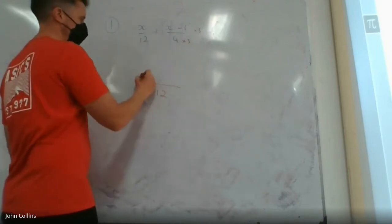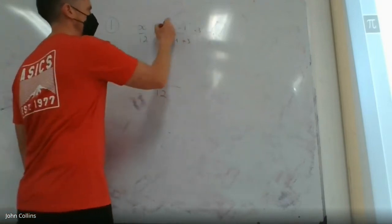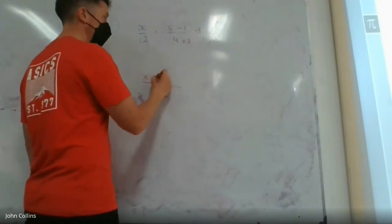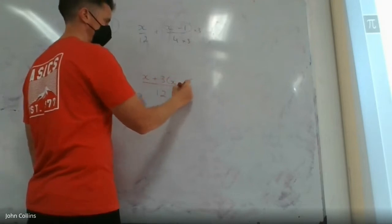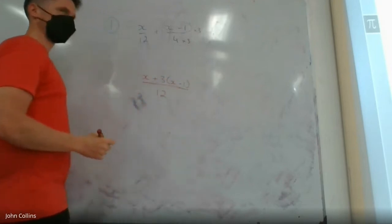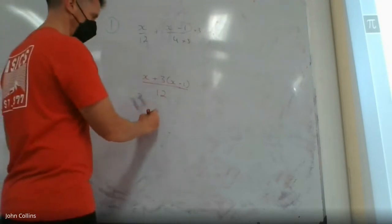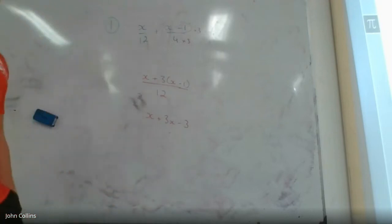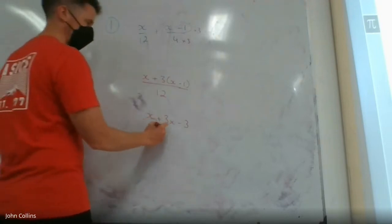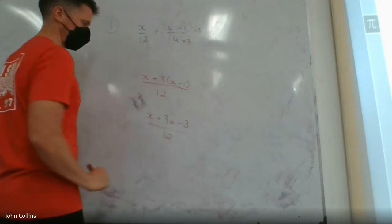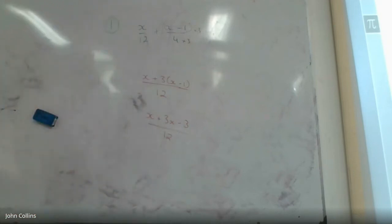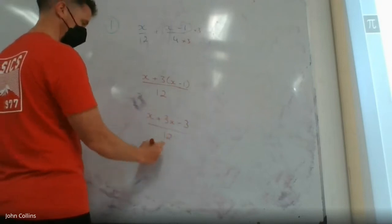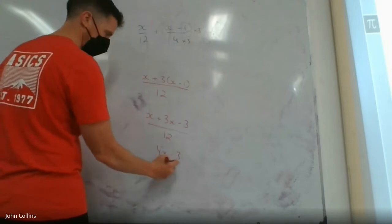This x is fine, this needs to be multiplied by 3. If you want, you can put in that as a step, multiplying both those by 3, or you can just jump straight to it, but make sure you multiply both terms by 3. Still over 12. Now I can combine some like terms on top of the fraction here. x plus 3x means it's 4x minus 3 over 12.